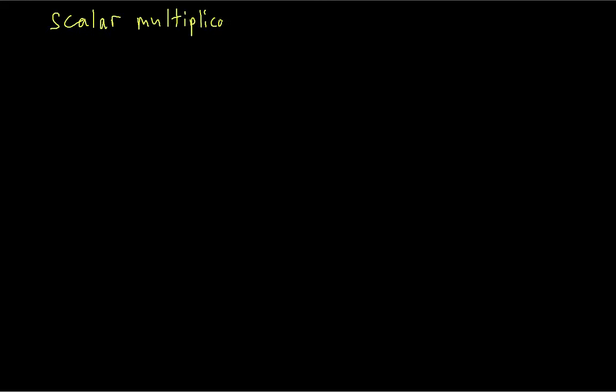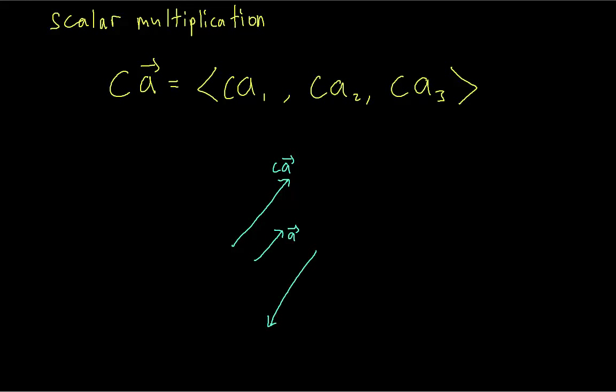The other operation that defines vectors is scalar multiplication. If we have a scalar C times a vector A, then all we do to get this vector is multiply all the components of A by the scalar. If the scalar is positive, it doesn't change the direction of the vector, it only changes the magnitude. If C is a negative number, it switches the direction of the vector.